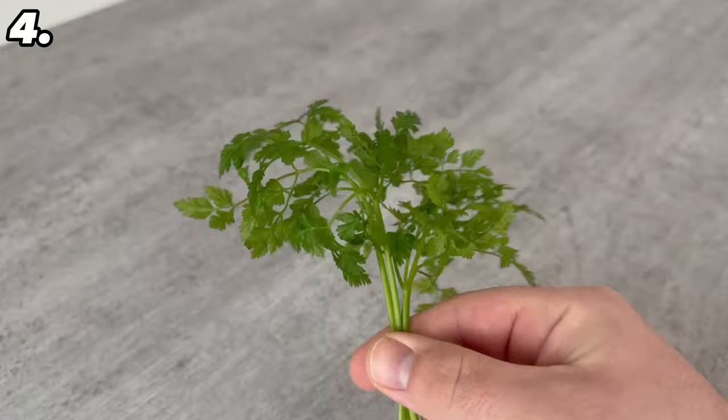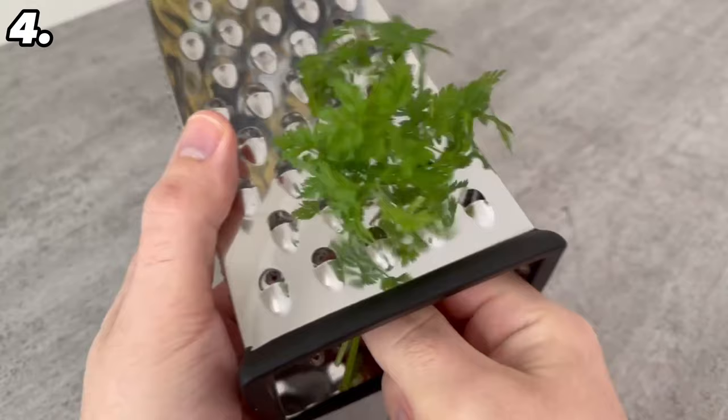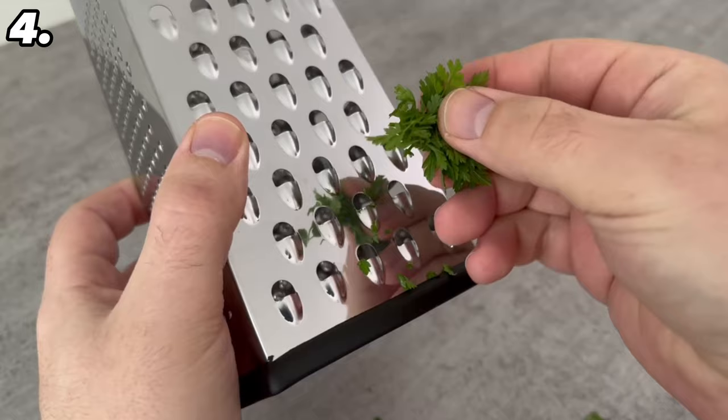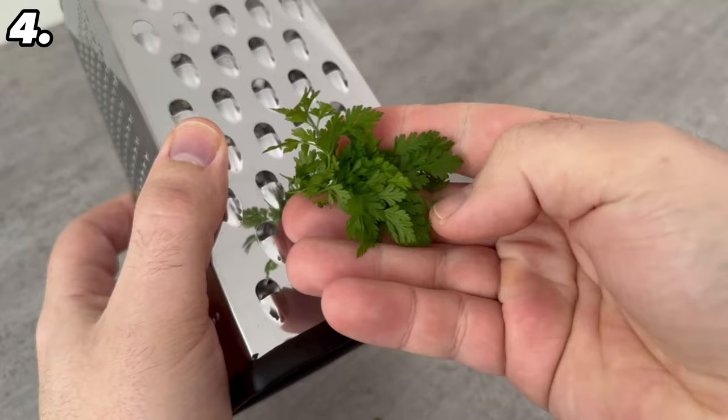If you have such herbs and now once you remove the leaves from the stems, then just pull them through a cheese grater. This way all the leaves are detached from the stem and you don't have to pluck them by hand.